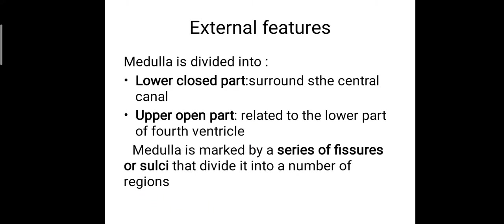The medulla is divided into two parts. There is a lower closed part which surrounds the central canal, which transmits the CSF to the spinal cord. Then we have the upper open part that is related to the lower part of the fourth ventricle. The medulla is marked by a series of fissures or sulci that divide it into a number of regions.